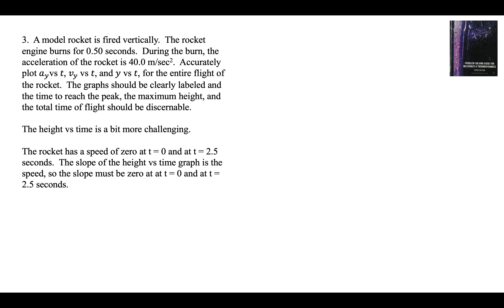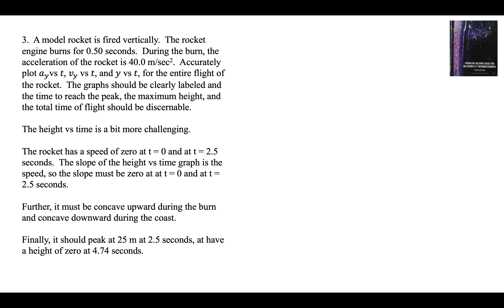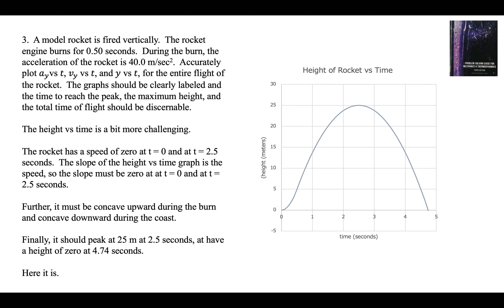For the height versus time graph, we have to be careful. The rocket has a speed of zero at t equals zero and at t equals 2.5 seconds, so the slope of the height-time graph — which equals the speed — must be zero (horizontal tangent) at both points. The curve is concave upward during the burn (accelerating) and concave downward during the coast (decelerating). It peaks at 25 meters at 2.5 seconds and returns to zero height at 4.74 seconds when it lands.